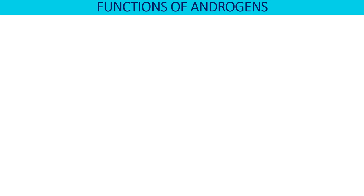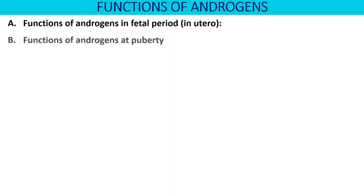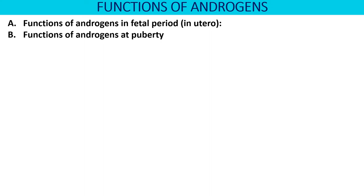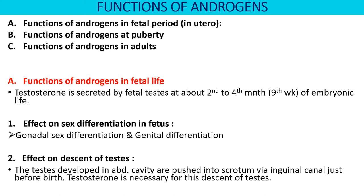The functions of androgens — testosterone and dihydrotestosterone — can be categorized under three headings: functions in utero, functions at the onset of puberty, and functions during adult life. During fetal life, testosterone is secreted by the fetal testes at about the second to fourth month of intrauterine life. It performs gonadal sex differentiation, genital differentiation, and causes the descent of the testes from the abdominal cavity into the scrotum just before birth.